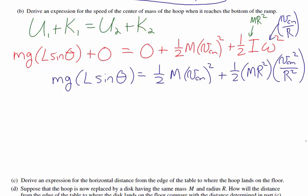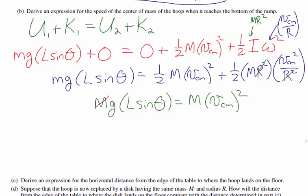Squaring the fraction v/R, the R squared terms cancel. So I have two terms that are both one-half M times v_cm squared, which combine to give M times v_cm squared. Dividing both sides by M and taking the square root, the velocity of the center of mass equals the square root of gL sine theta.